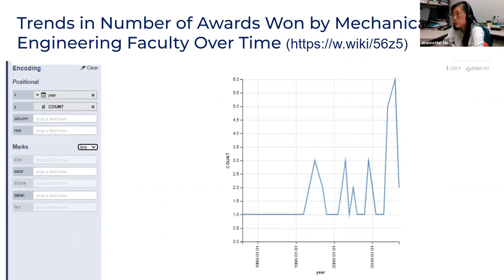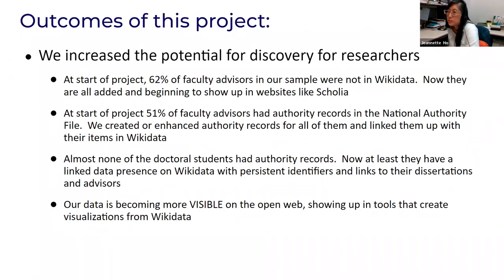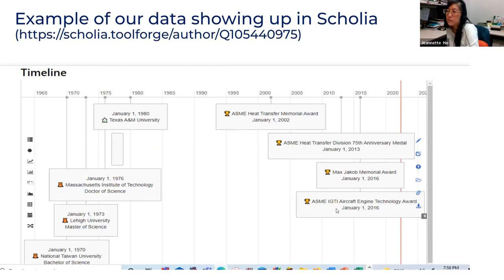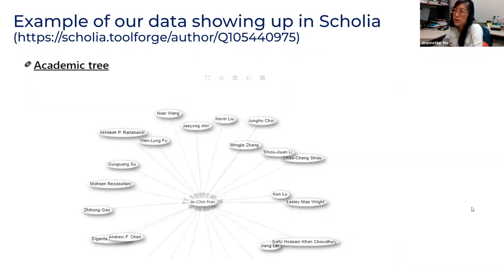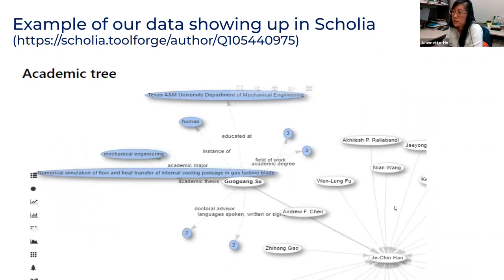Wikidata makes it easy to switch back to the tabular view so you can examine the numbers within that decade. As for outcomes, I think we have increased the potential for discovery. At the outset, 62% of our advisors were not in Wikidata, and slightly over half were not in the national authority file. So now they're in both places and they're linked together. Also, almost none of the doctoral students had authority records at the beginning, but now at least they have a linked data presence on Wikidata. Our data is starting to show up in various tools like Scholia — for example, you can see a timeline with data about what degrees they earned when, and at what institutions, as well as when they won certain awards. You can look at a cloud to see what students they advised, and see what the dissertations were for these students.